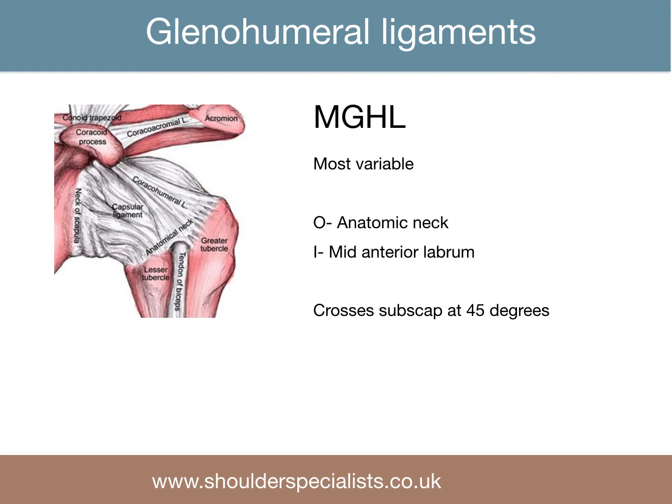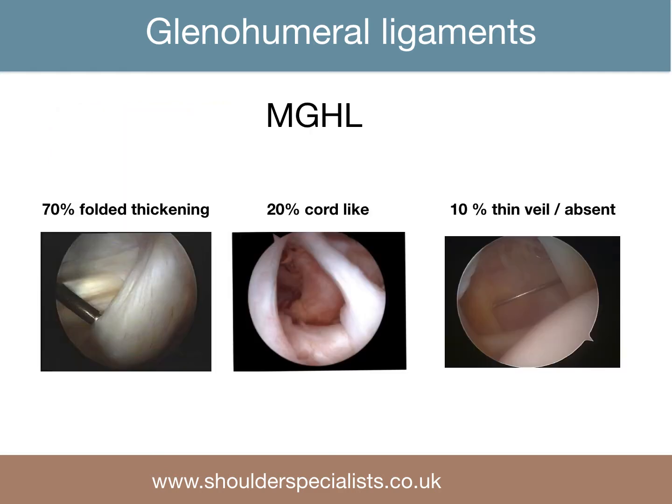The middle glenohumeral ligament is the most variable of all. When viewed arthroscopically, it crosses behind the subscapularis tendon at an angle of 45 degrees. In about 70% of shoulders the middle glenohumeral ligament is a thick folded band; in 20% it will be cord-like, and in 10% it will be a very thin veil or even absent.